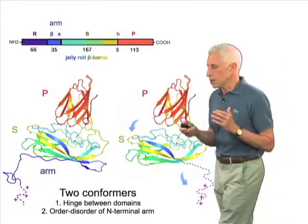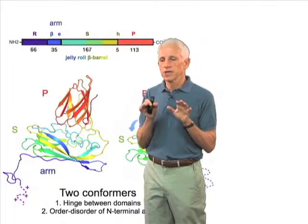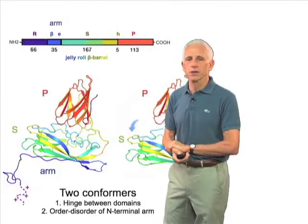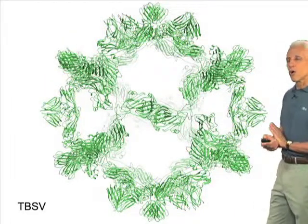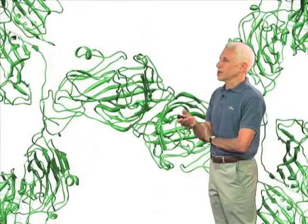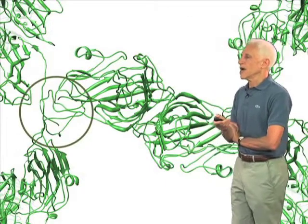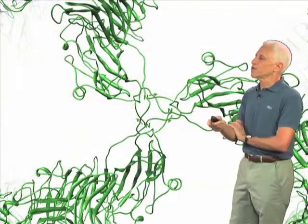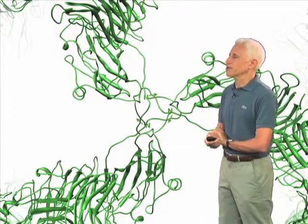So there is an elaborate inner scaffold that dictates the assembly, formed by parts of the protein subunit that are not rigidly folded and are not ordered until the assembly comes together. We can see that scaffold by focusing on the 60 of the 180 subunits that have an ordered arm. Looking at where three of them interact at a three-fold axis of the icosahedral symmetry, you see that there's an inner scaffold formed by the N-terminal arms of the protein subunit that dictates the size and character of the whole assembly.